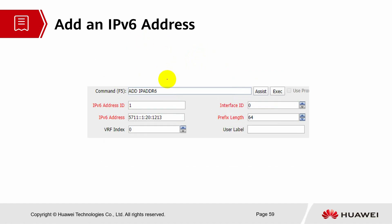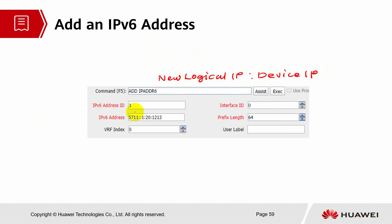ADD IP ADDRESS 6 — this is considered the new logical IP, similar to your DEVICE IP, so this is the new model concept. You can see the IPv6 address format has changed. We also have an IPv6 address ID. Interface ID is the same, and we have the prefix length command here.